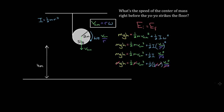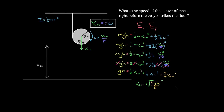Solving for the center of mass speed: gh equals three-fourths v_cm², so v_cm equals the square root of four gh over three. Plugging in the numbers: the square root of (4 × 9.8 m/s² × 4 m) divided by 3 gives us a center of mass speed of 7.23 meters per second.